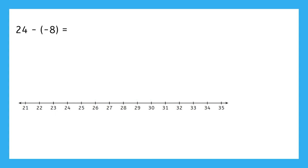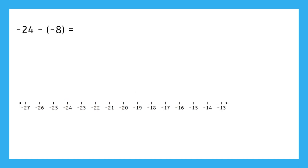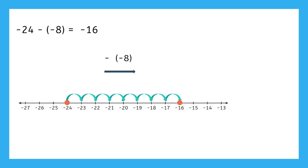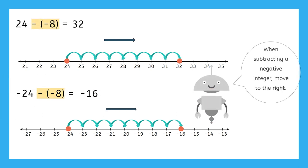Let's try 24 minus negative 8. Remember what we said about what negatives tell us to do? They tell us to go in the opposite direction of the operation being used. Subtraction tells us to go to the left, but the negative tells us to do the opposite, which in this case is to go right. So we'll start at 24 and move to the right 8 spaces, giving us 32. How about negative 24 minus negative 8? Just like the last problem, we know that subtracting a negative really means to move to the right. So if we start at negative 24 and move to the right 8, we end up at negative 16. So negative 24 minus negative 8 equals negative 16. Now we've also discovered that when we subtract a negative integer, we move to the right on the number line.